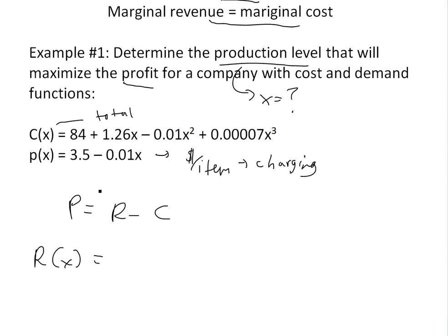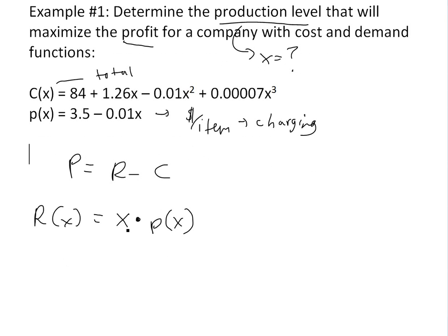Revenue, I showed in my earlier video, is just the amount of items you produce times by the price per item that you are charging. So this times by P of X. Now if we plug this inside here, we're going to get 3.5X minus 0.01X squared.